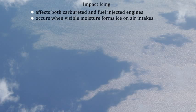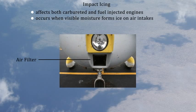Both carbureted and fuel injected engines are susceptible to impact icing, which results when the airplane flies through visible moisture that forms ice on the engine's air intake or air filter. This impact ice blocks the flow of air into the engine. To counteract impact icing, many engines include a manual or automatic valve which provides an alternative intake air supply.